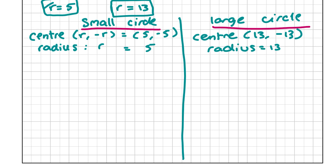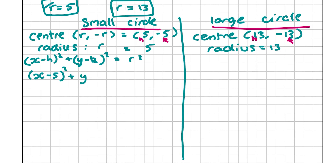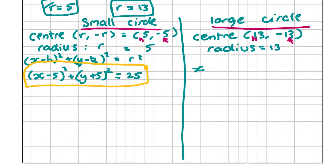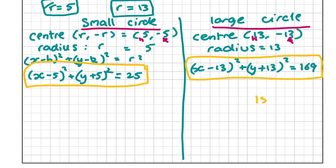Using the general equation (x minus h) squared plus (y minus k) squared equals r squared, for the small circle: (x minus 5) squared plus (y plus 5) squared equals 25. For the large circle: (x minus 13) squared plus (y plus 13) squared equals 169. These are the two equations for the circles as requested, and altogether for this question you're going to get 15 marks.